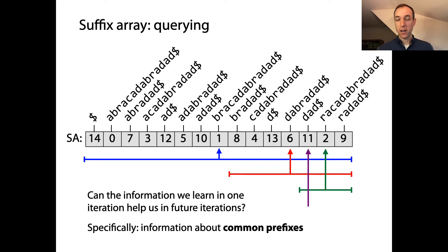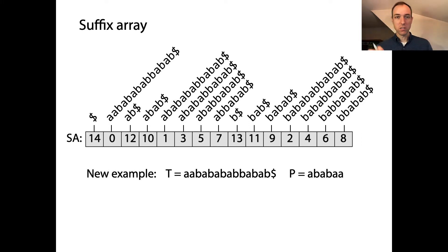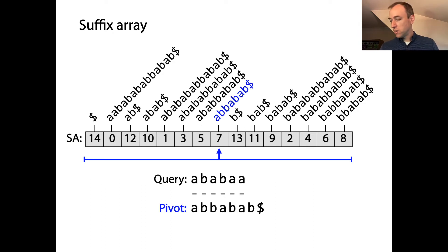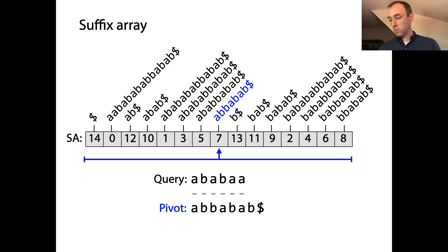We can, so let me show you how. Let's start this same query process over again from the first step. I now have to switch to a new example because I need it to be pretty repetitive to highlight the point I want to make here. So here's a nice repetitive example — I've got my text and my pattern. The first step, as usual, is a lexicographical comparison between my query, my pattern, and the pivot suffix in the middle of the remaining interval.